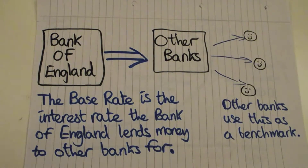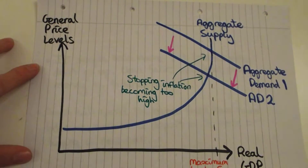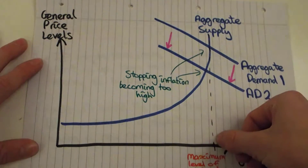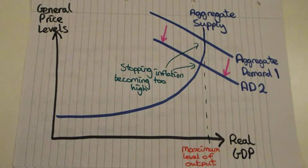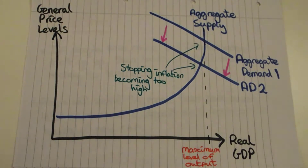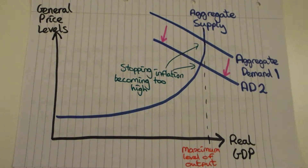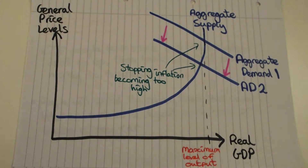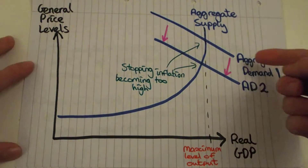Looking at aggregate supply: there's a dotted line representing our maximum level of output, because at some point we can't produce any more goods or services. We might run out of teachers, for example — no matter how high the demand for education, until we train more people to teach, we won't get more teachers. When aggregate demand intersects our supply curve at a high point, the Bank of England might want to prevent inflation from becoming too high or prevent hyperinflation, so it will raise interest rates.